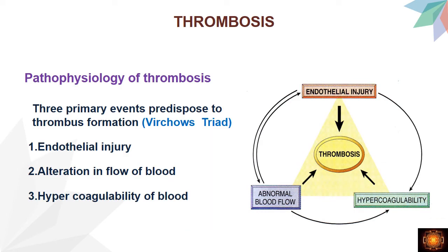Coming to the pathophysiology of thrombosis, we have three important factors responsible for thrombosis. This diagram is taken from Robbins. The three factors which are important are endothelial injury, hypercoagulability, and abnormal blood flow. These three factors form a triad and we call this triad Virchow's triad. These factors are interrelated.